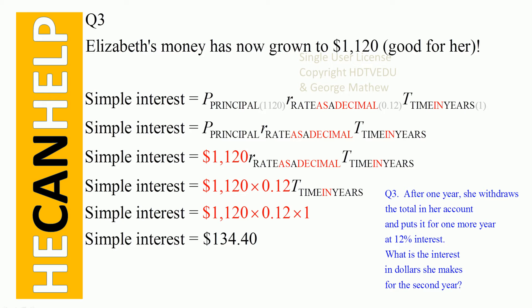Question number three: Elizabeth's money has now grown to $1,120. She withdraws that money and puts it back into the bank at 12% interest for one more year. So the new principal is $1,120, the rate as a decimal is 0.12, and the time is one year. Principal times rate times time: 1,120 times 0.12 times 1, and she receives $134.40 as interest in the second year.